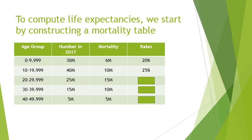10 million deaths out of 40 million is 25 percent mortality. 15 million out of 25 million is 60 percent mortality. 10 million deaths out of 15 million population is 66 percent — two-thirds mortality. And finally in the last age group we have 100 percent mortality. This is a mortality table: it tells you the rates of death in each age group.